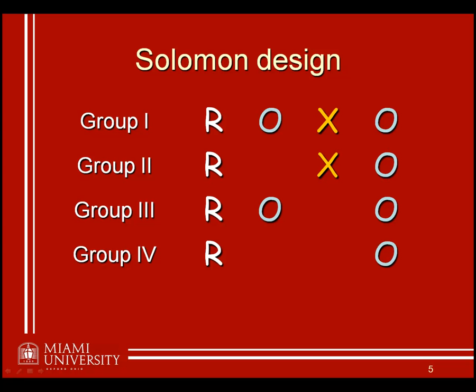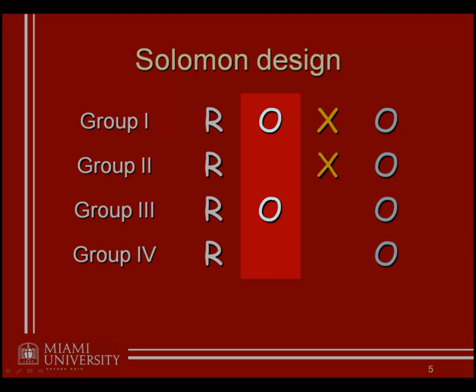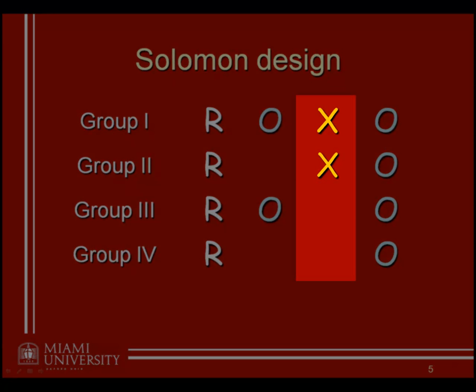You may recall the Solomon design from when we talked about a different design effect and trying to account for potential confounds with repeated measurement or repeated testing. The Solomon four-group design begins with random assignment of individuals to one of four different groups. What this actually is, is a factorial design where the two factors are whether or not there is a pretest and whether or not the treatment or manipulation is involved in a specific group.